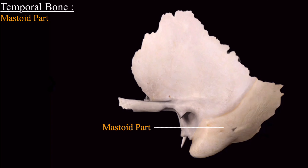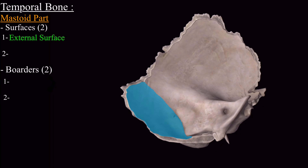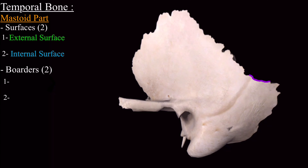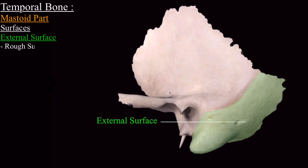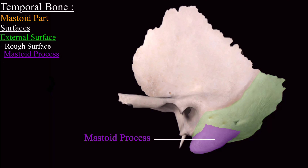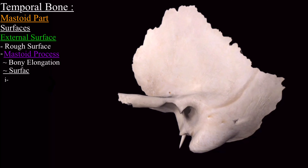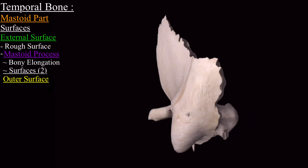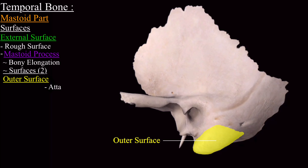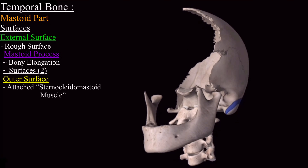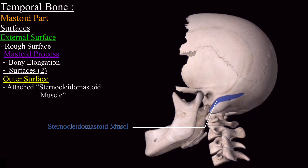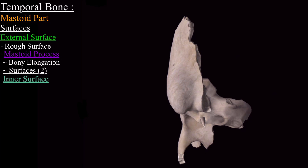Next is the mastoid part of the temporal bone. It has two surfaces and two borders: the external surface, the internal surface, the superior border, and the posterior border. The external surface is rough in nature and below is continuous as the mastoid process, which is a bony elongation. The outer surface of the mastoid process provides attachment to the sternocleidomastoid muscle.